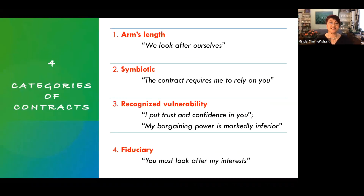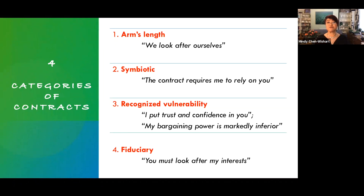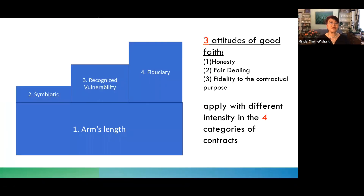The four categories are: first, arm's length contracts — we look after ourselves. Second, symbiotic contracts — the contract requires me to rely on you. Third, contracts involving a recognized vulnerability, either a trusting relationship or markedly unequal bargaining power. Fourth, fiduciary relationships — you look after my interests. Broadly speaking, class one arm's length contracts attract a base level of the three good faith attitudes manifested in existing top doctrines, and these are really quite substantial as we will see.